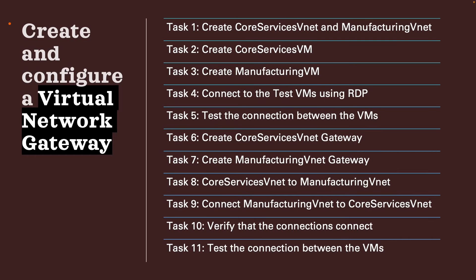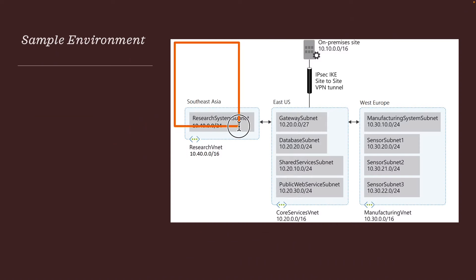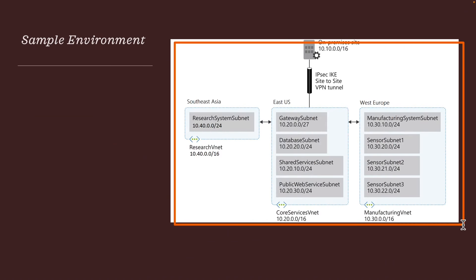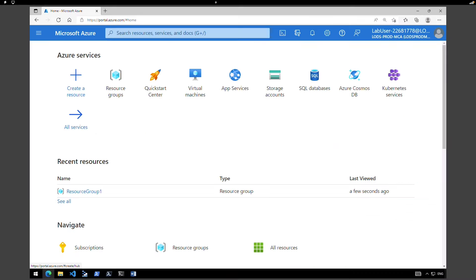The first exercise we are going to do is create and configure a virtual network gateway. Our sample environment looks something like this. The first step is to create two VNets: Core Services VNet and Manufacturing VNet. We're going to create two VMs and place them in both of these subnets. I'm going to use a JSON file or an ARM template to create these Core Services VNet and the Manufacturing VNet.